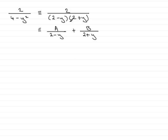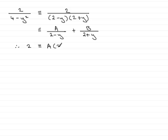In the next stage, I multiply both sides by the denominator, 4 minus y squared — or equivalently by (2 minus y)(2 plus y). On the left hand side we therefore have 2, and this is identical to A multiplied by (2 plus y), plus B multiplied by (2 minus y).